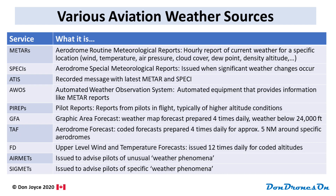Here are the main aviation weather services available. They specialized in obscure and strange acronyms when they came up with these. Notice that some of them are instantaneous status reports on the weather, like the METARs, which we'll talk about more in a second. Other ones, like the TAF for example, are aerodrome forecasts. So some are current weather situations and others are forecasts.